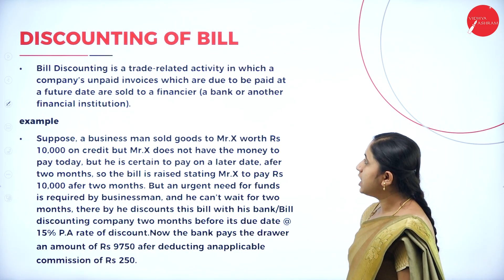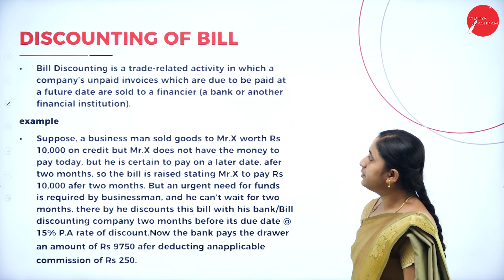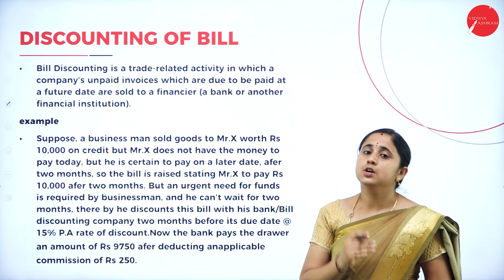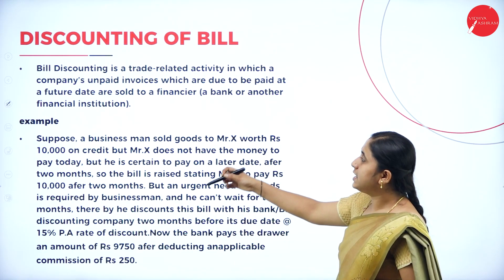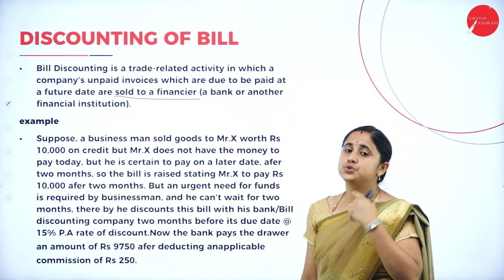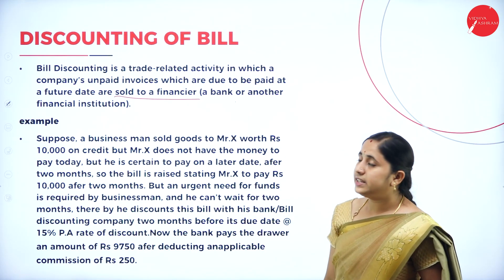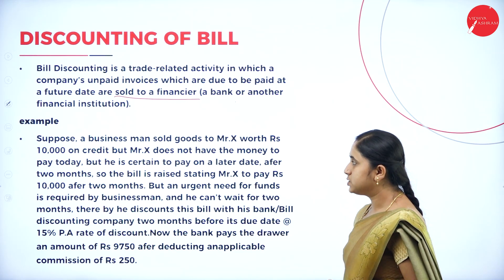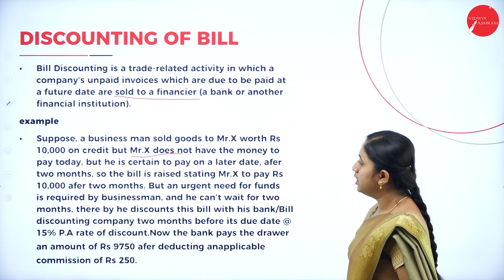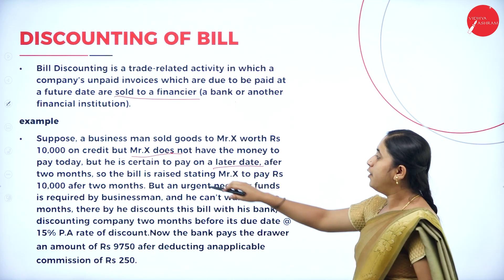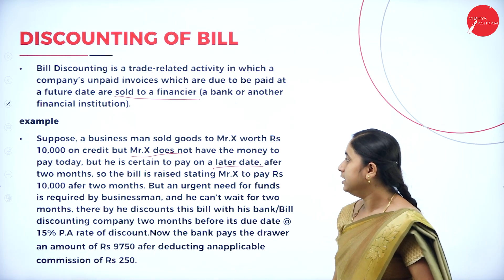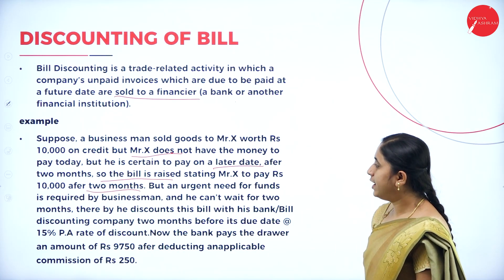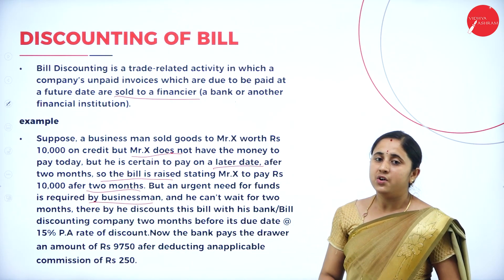Endorsement is done by signing at the back of the bill. The endorser is the existing or old holder, and the endorsee is the new holder. Next, discounting of bill. Bill discounting is a trade-related activity in which a company's unpaid invoices, which are due to be paid at a future date, are sold to a financier — a bank or another financial institution. The company has some unpaid invoices, and to meet their expenses they sell those invoices to the financier to get short-term finance.